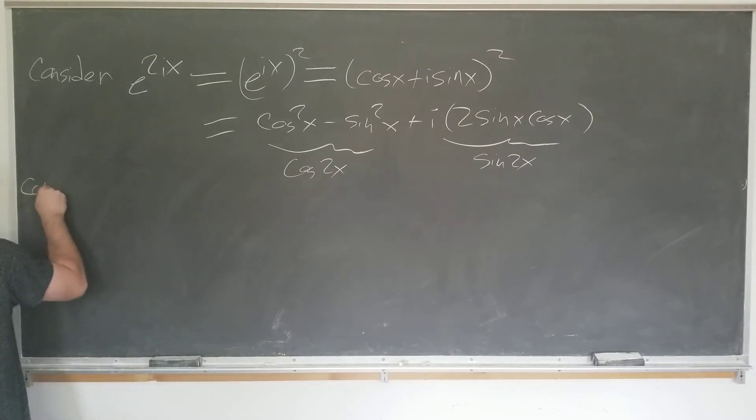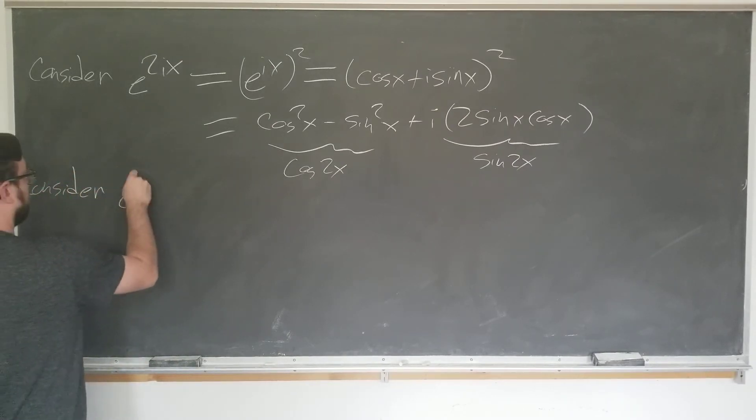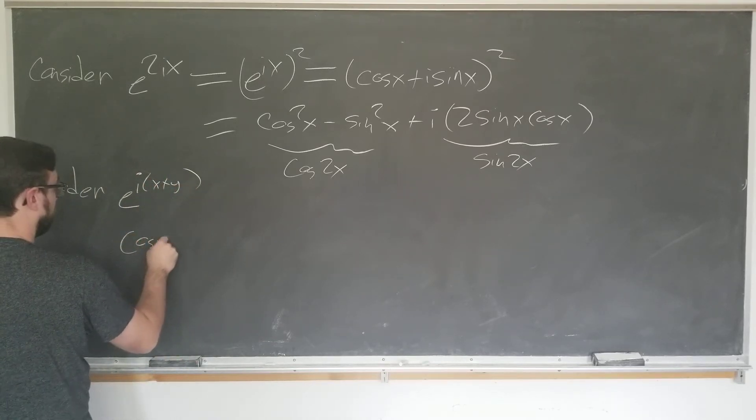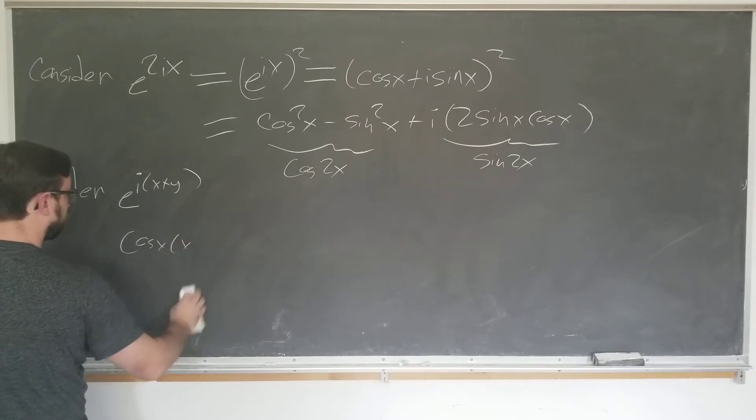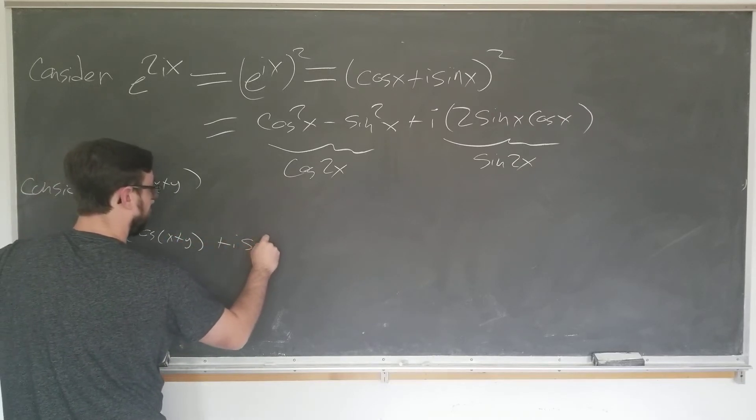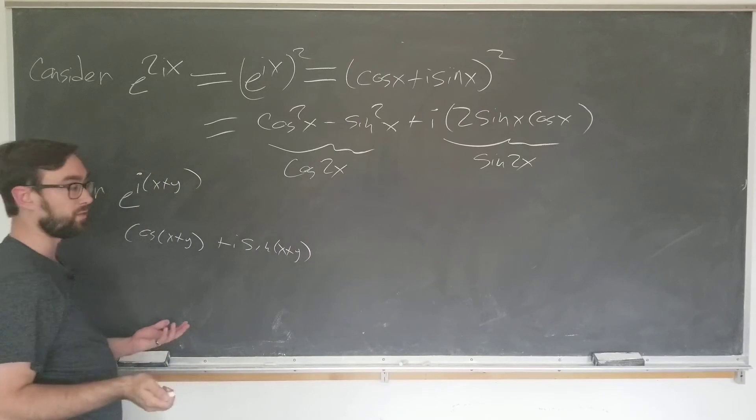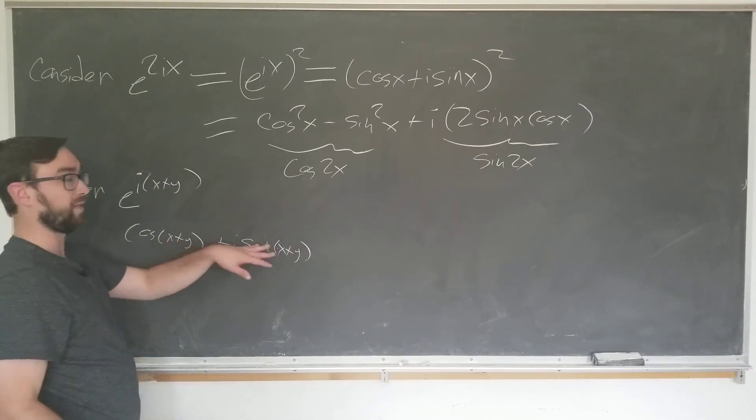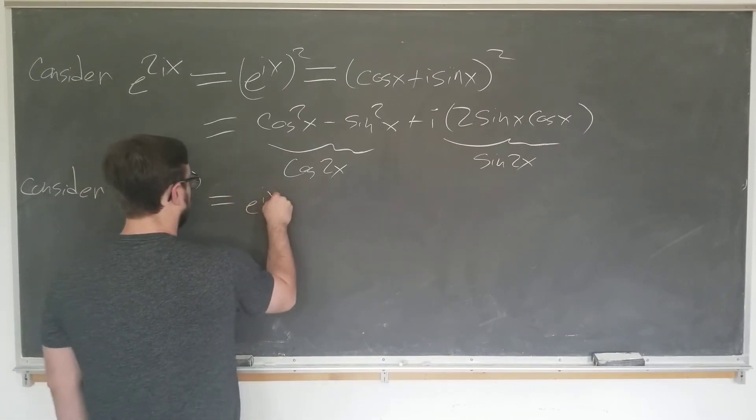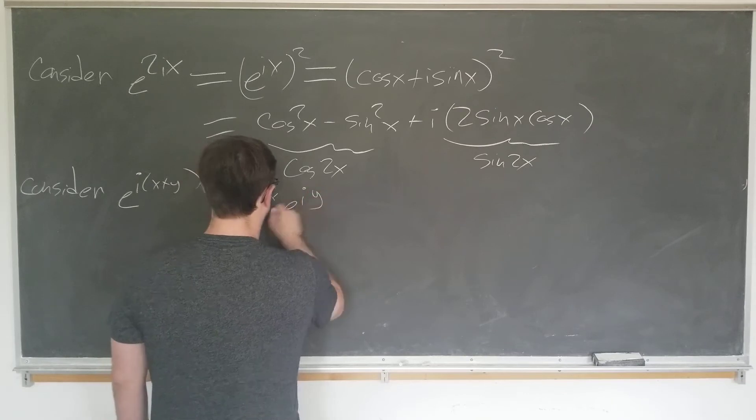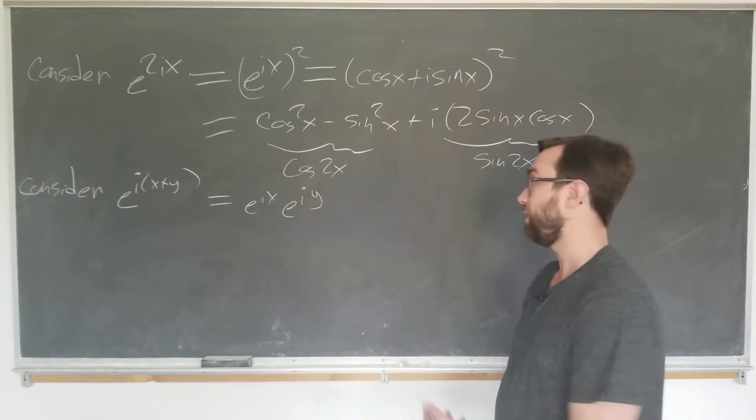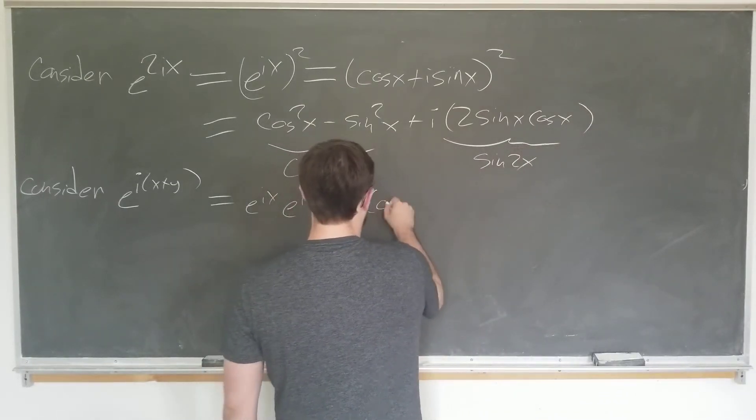So, now we're going to consider e to the i times x plus y. Of course, this is going to be cosine of x plus y plus i sine of x plus y. That's why we're considering it. But that's not really part of the derivation. You have to keep this in your head in advance, which you would in an exam anyways. It's equal to e to the ix times e to the iy by the properties of exponentiation. Note, it's the same above if x is equal to y. So, that's how this generalizes. Using it twice here, Euler's formula that is.